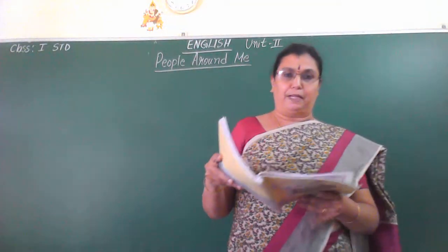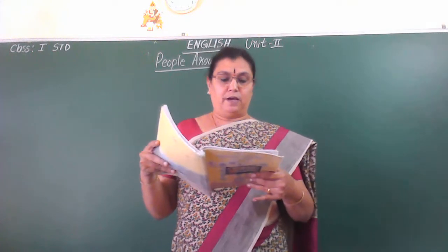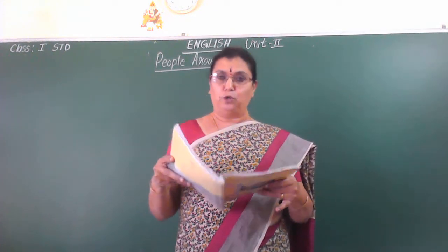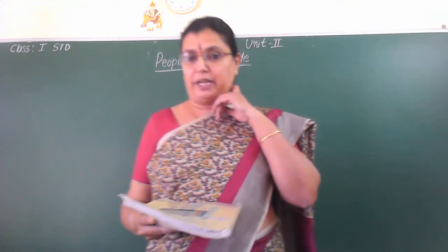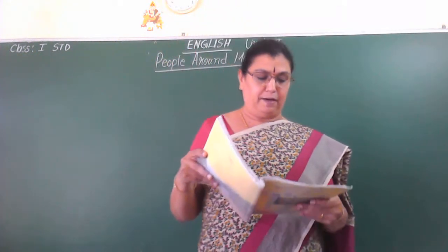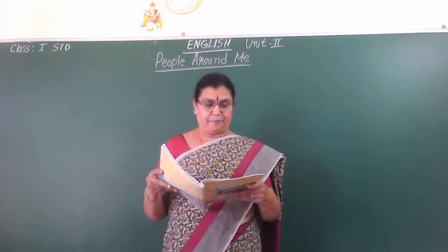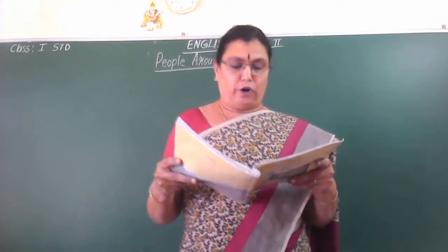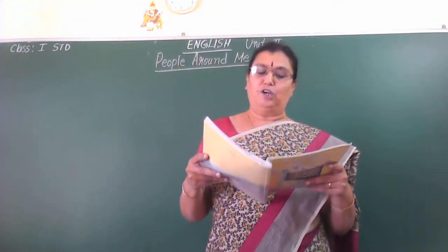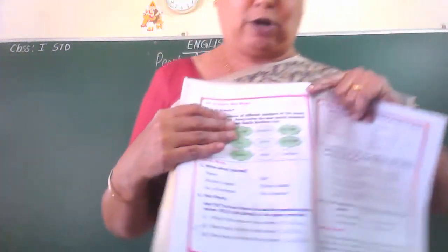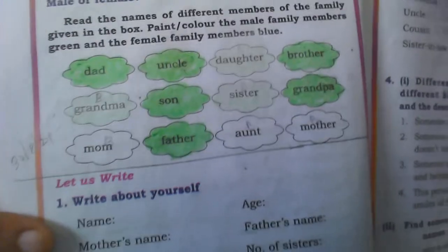Open your textbook to page number twelve — 'Write about yourself,' meaning about you only. I will ask you: what is your name? You will say your name, so you have to write your name, your mother's name, number of brothers, how many brothers do you have, your age, your father's name, and how many sisters do you have. This is the column given here. You have to fill that in your textbook, okay children.